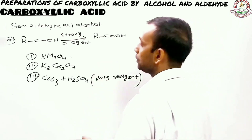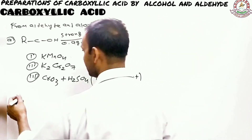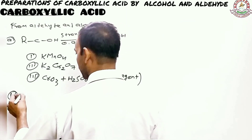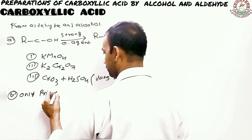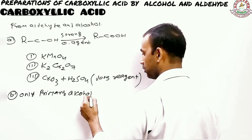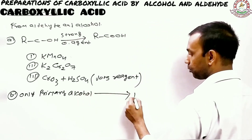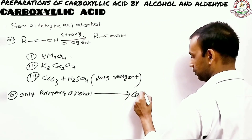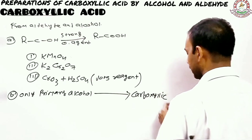This particular reagent — CrO3 with H2SO4 — is also called Jones reagent. Now another important thing to add: only primary alcohol gives carboxylic acid.